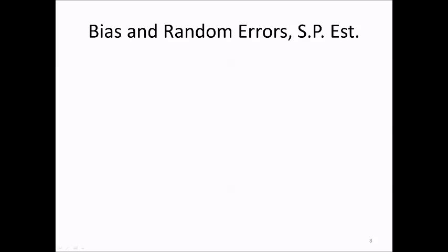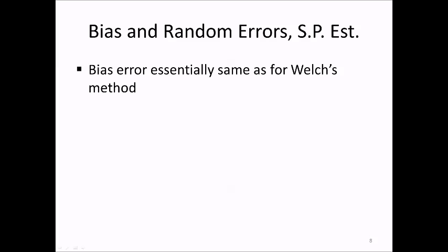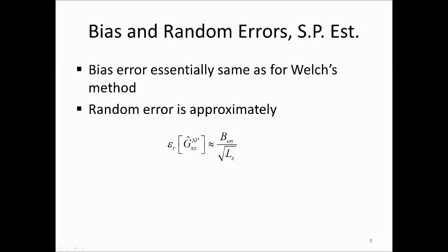A few words about bias and random errors for the smoothed periodogram estimator. The smoothed periodogram estimate will have a bias error very similar to that for the Welch method — this is shown in more detail in the book. The random error can be computed, at least approximately, as the normalized equivalent noise bandwidth b sub en of the window divided by the square root of the smoothing window length L sub s. Since we normally use the rectangular window for smoothing, b sub en equals 1, and the random error is simply 1 over the square root of L sub s.